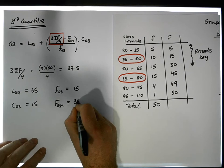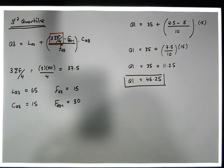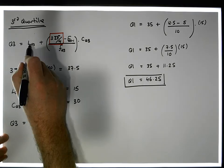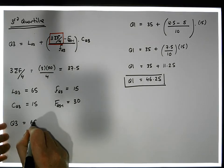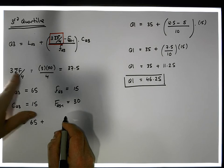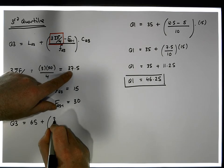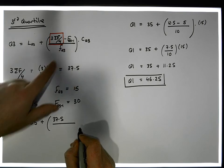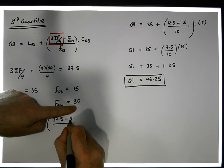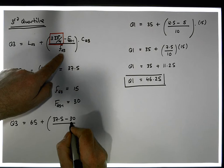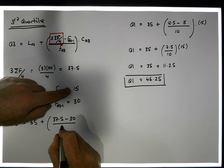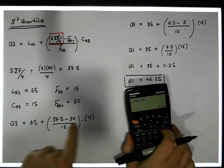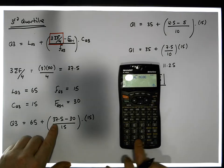So now we're nearly there. Q3 must be equal to L of Q3, which is 65, plus 3 times sigma f over 4, which is 37.5, minus the cumulative frequency of the one before — which is 30 — all relative to small f of Q3, which is 15, multiplied by the class width of 15. Now let's work out the fractional amount: 37.5 minus 30.